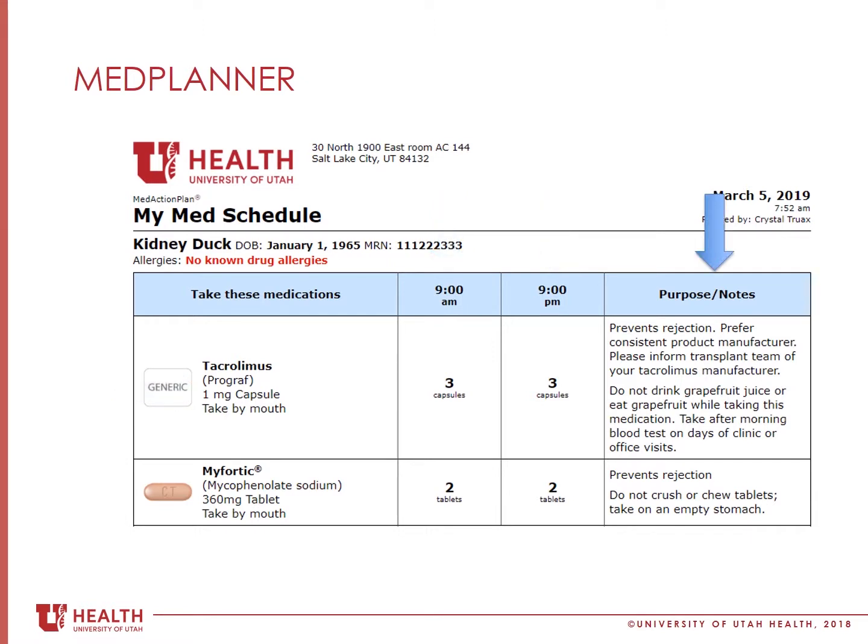All the way to the right side of the med planner, it tells you what the medication is used for, and for some medications, it will tell you how long you will be taking it. Sometimes additional information is listed here as well.